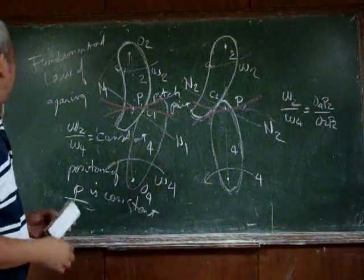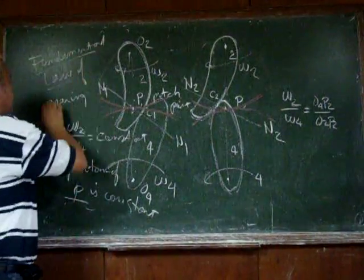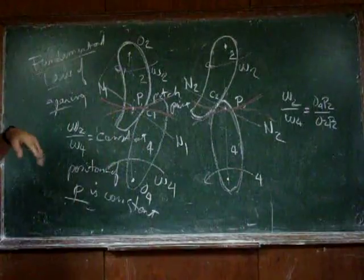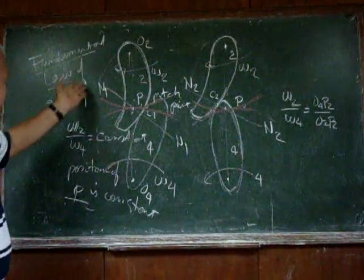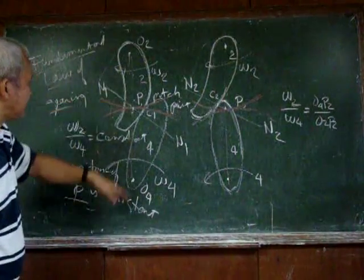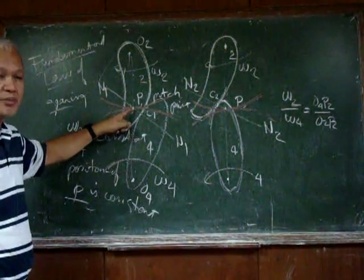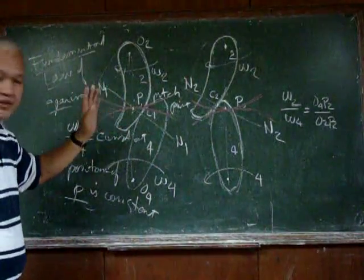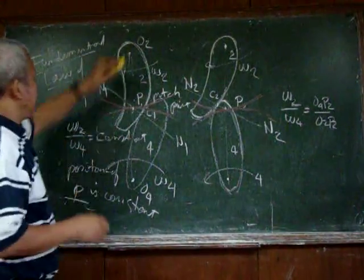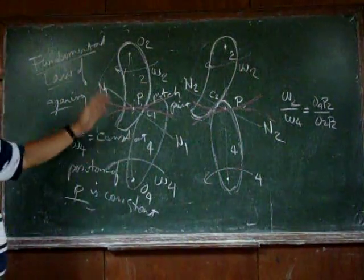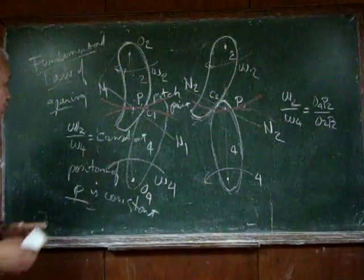So again, when we talk of the fundamental law of gearing, the surfaces must be in such a way that the common normal must always intersect the line of centers at a certain point P. The position of point P must always be the same, and therefore the ratio of rotation of the two bodies is constant.